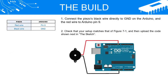The build: 1. Connect the piezo's black wire directly to GND on the Arduino, and the red wire to Arduino pin 9. 2. Check that your setup matches that of figure 7-1, and then upload the code shown next in the sketch.